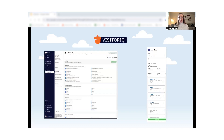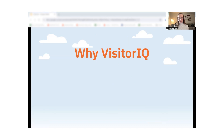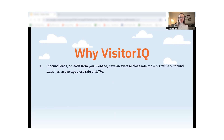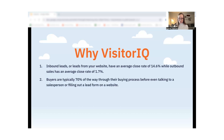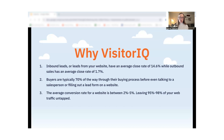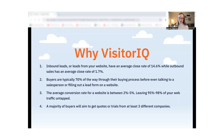Before we dive in and start using VisitorIQ, let's go over a few statistics. Inbound leads or leads from your website have an average close rate of 14.6%, while outbound sales have an average close rate of 1.7%. Buyers are typically 70% of the way through their buying process before even talking to a salesperson or filling out a form on your website, which means that the people visiting your site are highly valuable leads. The average conversion rate for a website is between 2% and 5%, which means that you're leaving 95% to 98% of your web traffic untapped.